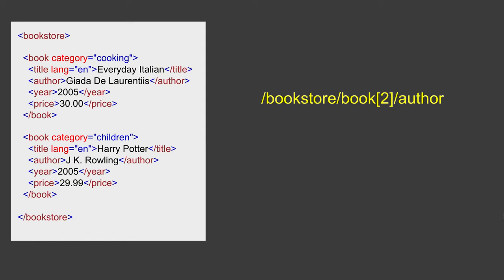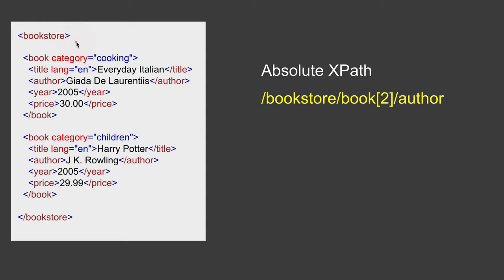What we have created is called the absolute XPath. Absolute means it starts from the root element — here, bookstore is the root. It goes step by step all the way to the element you want to extract. This can be very long and complex. The example here is a simple XML, but in the real world XML can be very long and deeply nested.